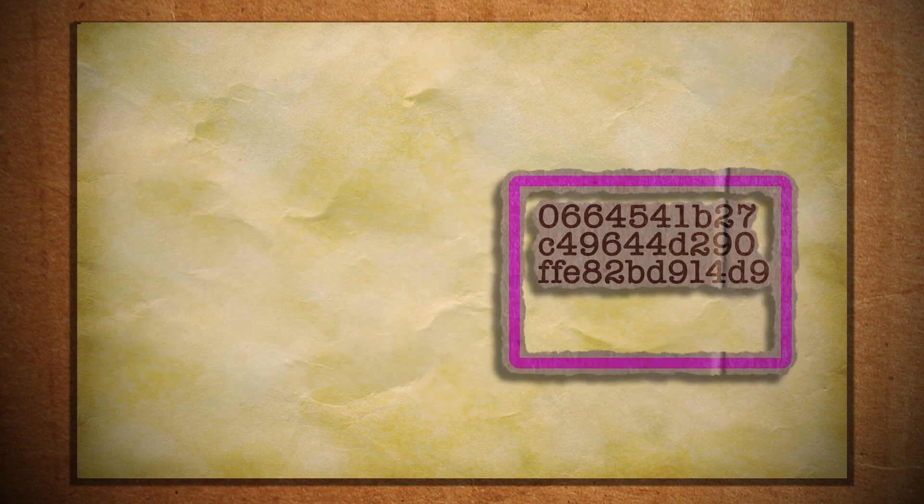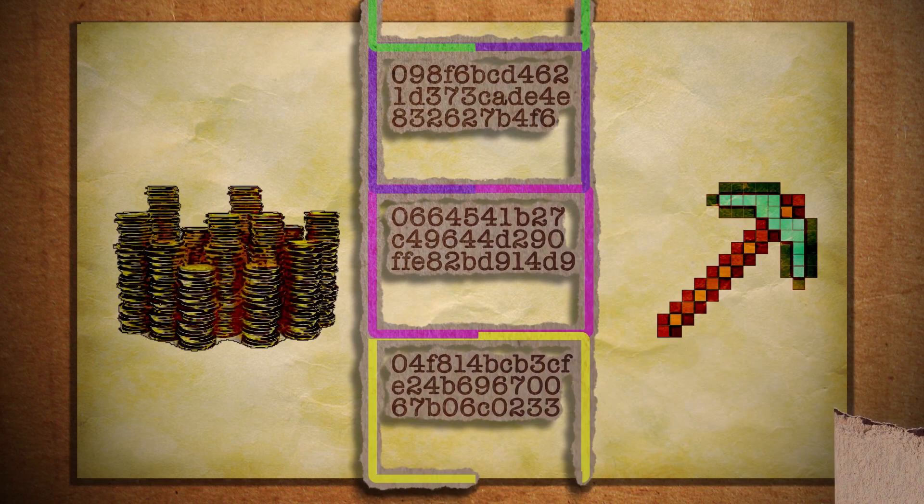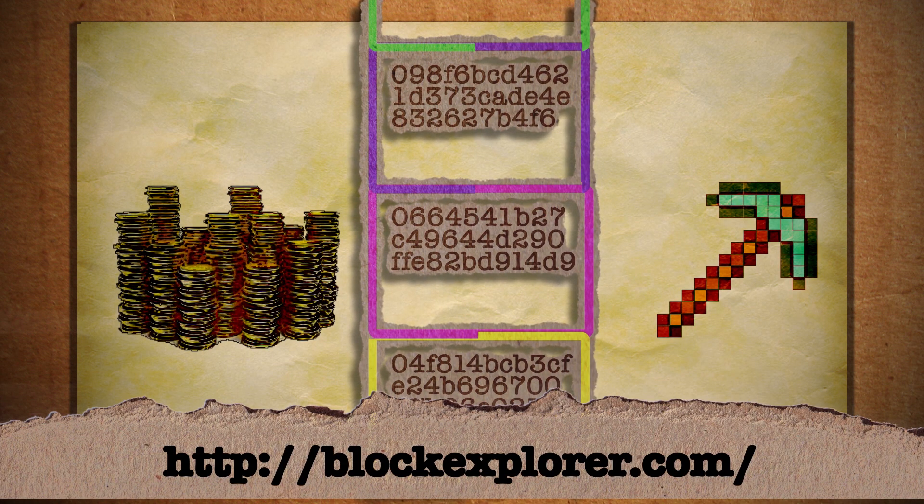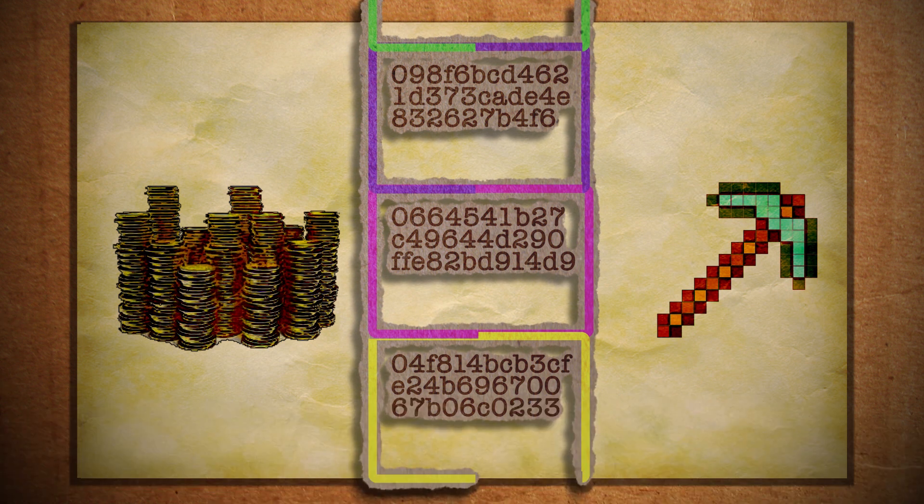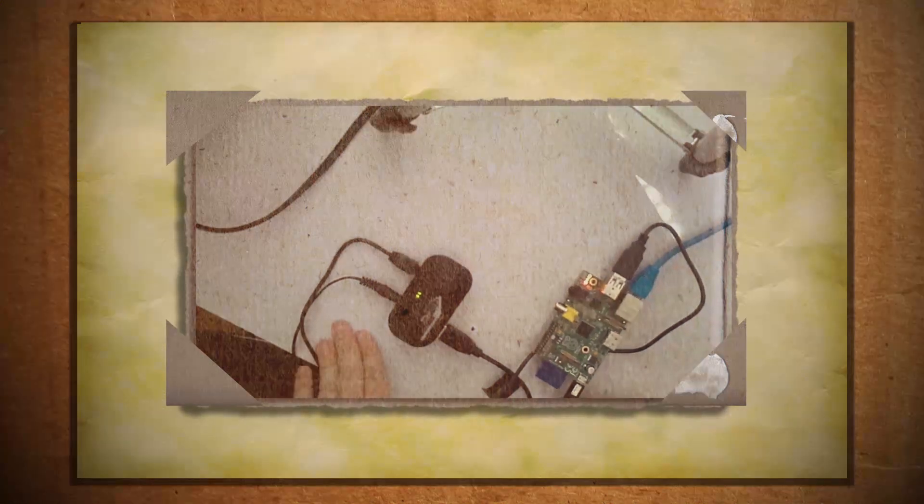Then the block is added to the blockchain and the miner gets their reward. You can visit this website if you want to see what an actual blockchain looks like. If you want to try your hand at mining bitcoins, you can click here to find out how to set up a Raspberry Pi mining rig.